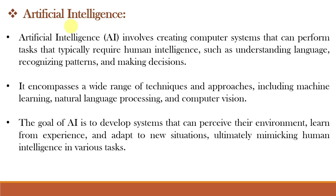Let us understand Artificial Intelligence in more detail. AI means computers doing things that need human-like thinking — like understanding words, spotting patterns and deciding stuff. AI uses many different methods like machine learning, understanding language and seeing things like humans. AI's aim is to make computer systems that can look around, learn from what they see, and handle new situations, trying to be as smart as humans in different jobs.